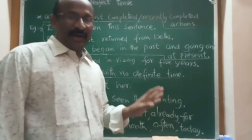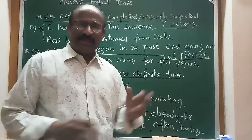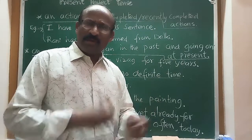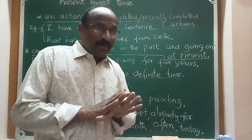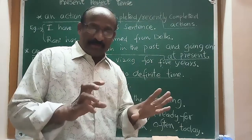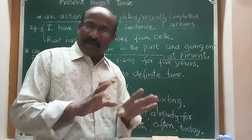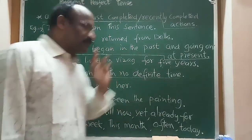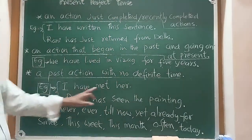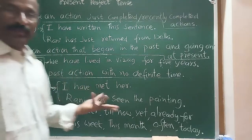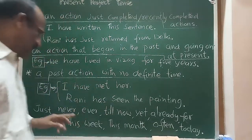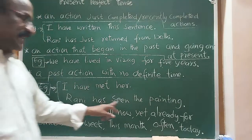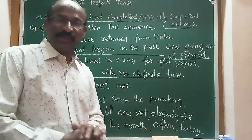For a past action with a definite time — like yesterday, last week, last month, long ago, long back — you do not use present perfect. These time expressions belong to simple past tense, not present perfect. For example, 'Rani has seen the painting' is present perfect because no definite time is mentioned.